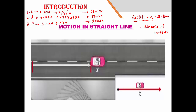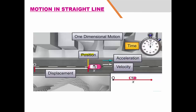So: straight line = 1 axis = 1-dimensional; plane = 2 axes = 2-dimensional; space = 3 axes = 3-dimensional. The description of motion of a body involves its position, displacement, velocity, acceleration, and time. These are the terms related to one-dimensional motion, which you studied in the previous chapter — including position or path length, displacement, speed, velocity, acceleration, and time interval.